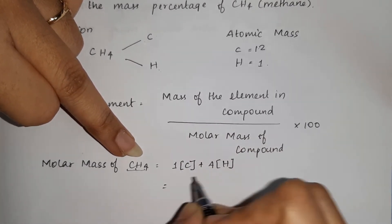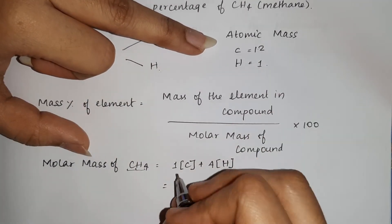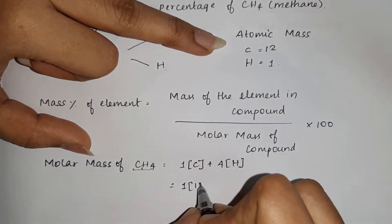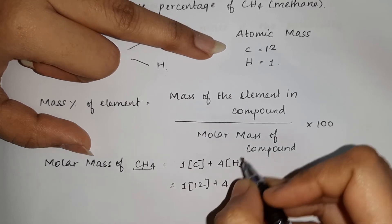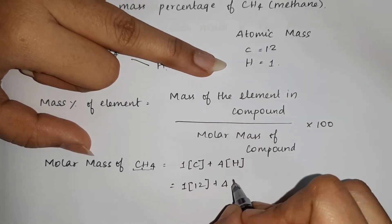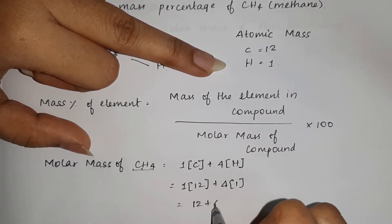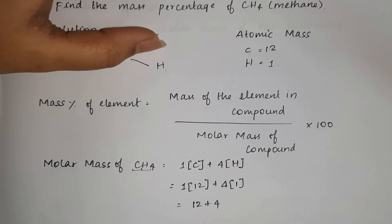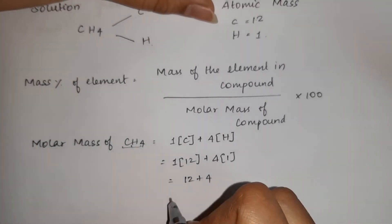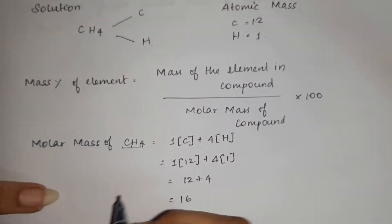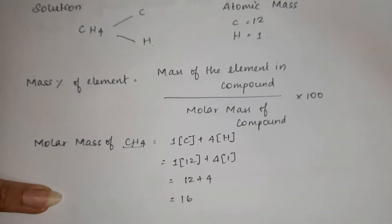Carbon atomic mass is 12, plus 4 into hydrogen atomic mass is 1. So when we add, 12 plus 4 is 16. So the molar mass of CH4 is 16.